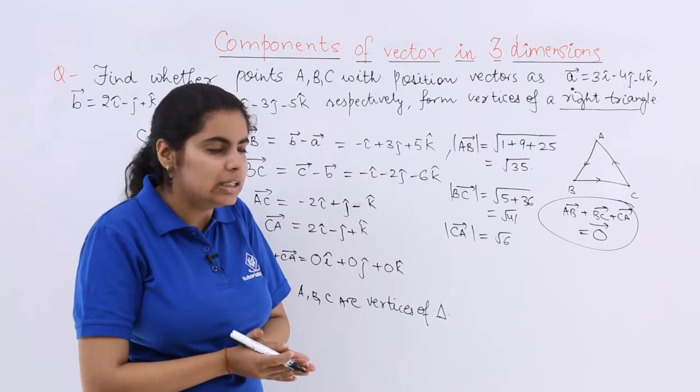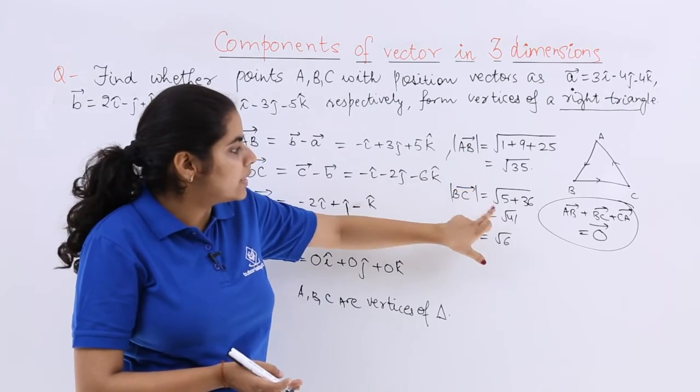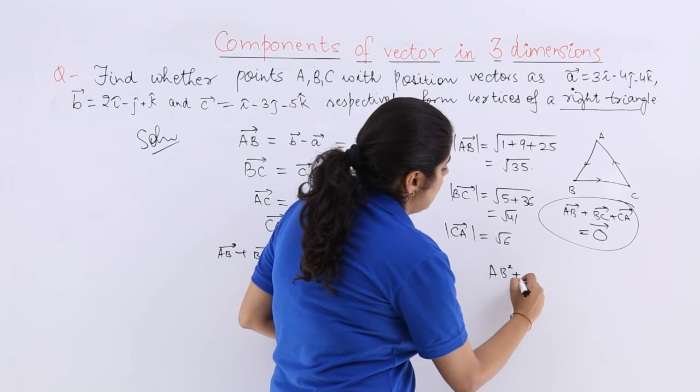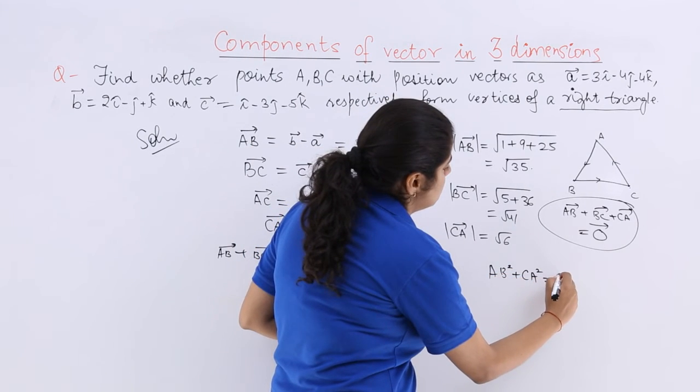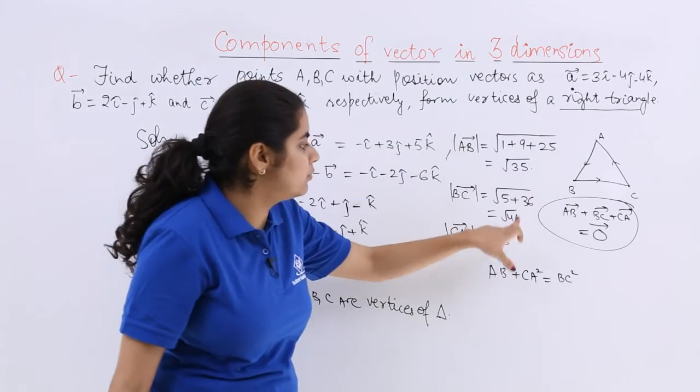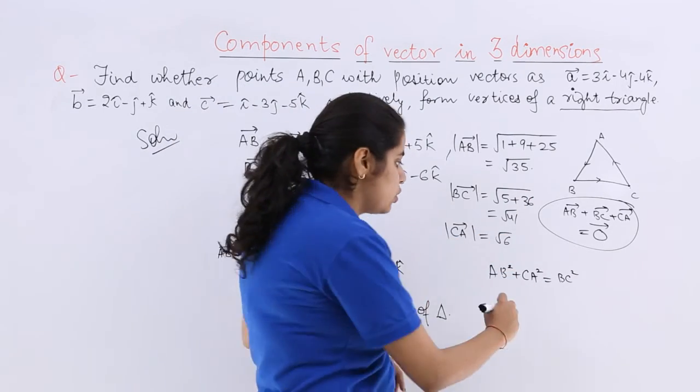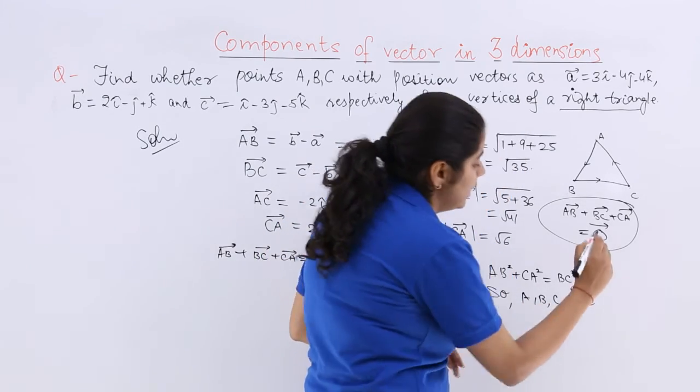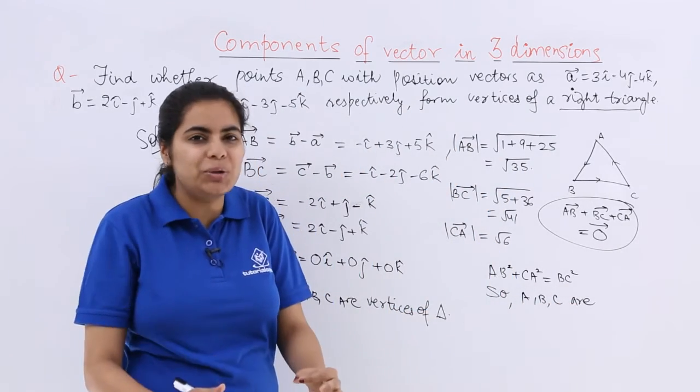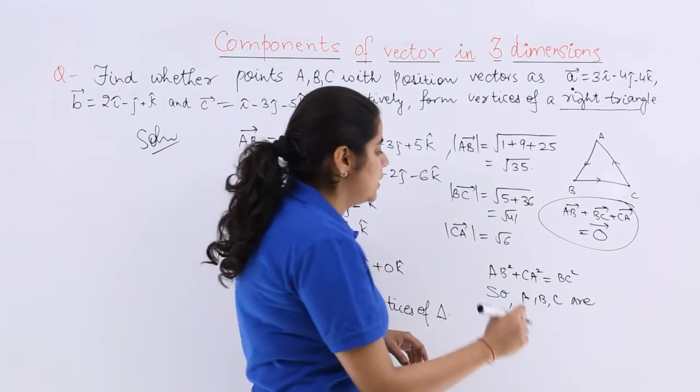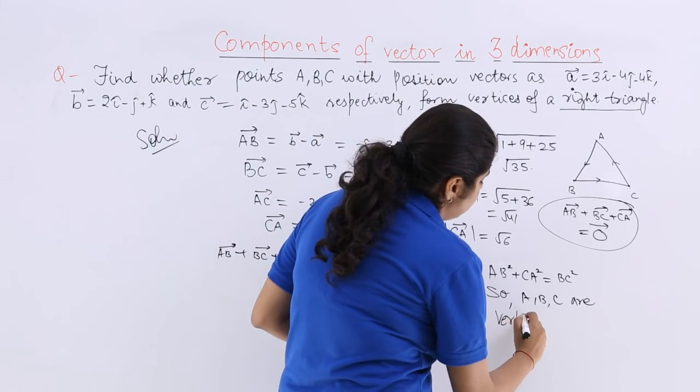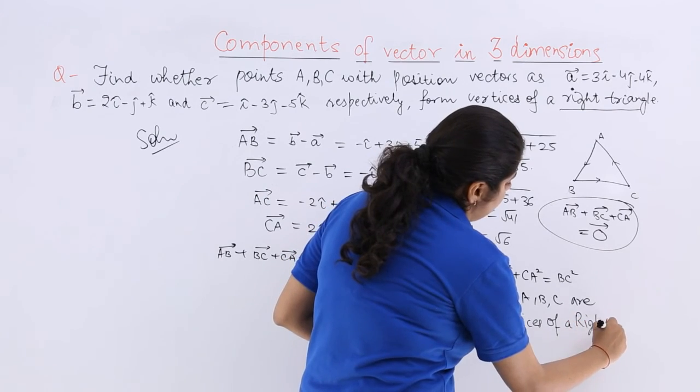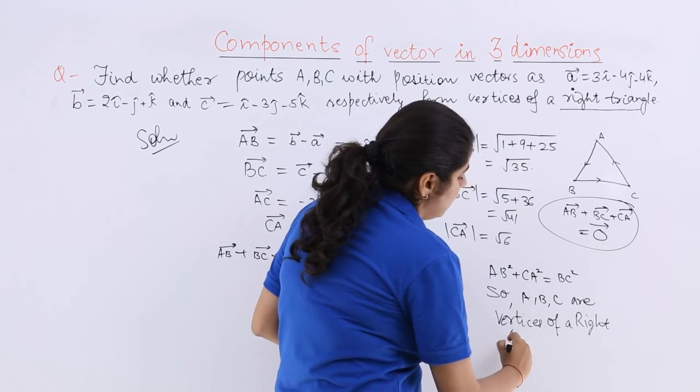Now as you can see clearly AB square plus CA square is equal to BC square because 35 plus 6 is 41. So ABC are now proved that they are not only the vertices of a triangle but that of a right triangle.